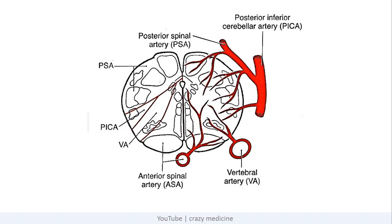This is another diagram of the cross-section of the medulla. As you can see, the anterior spinal artery and vertebral artery supply the medial part of the medulla, and the posterior inferior cerebellar artery and its branches supply the lateral part. Remember, the posterior spinal artery is a branch of PICA. To understand the manifestations of both syndromes, we need to know what structures are involved in the medial and lateral parts.